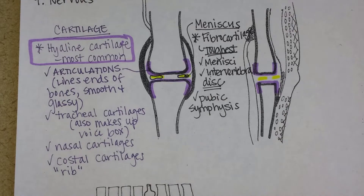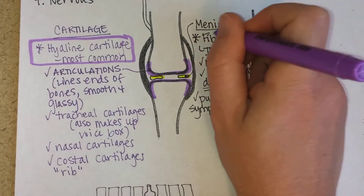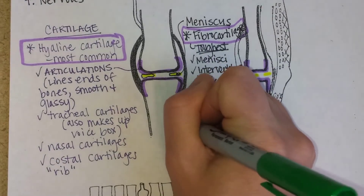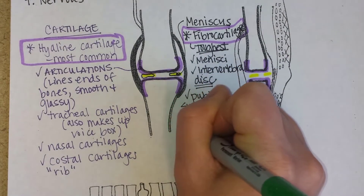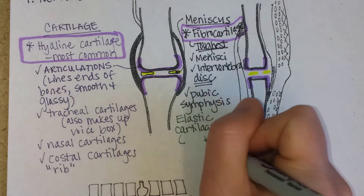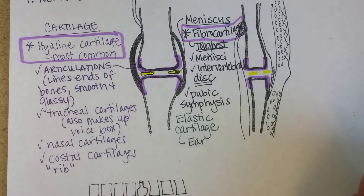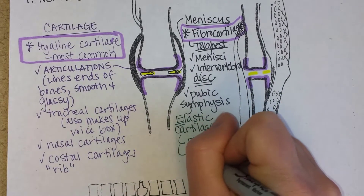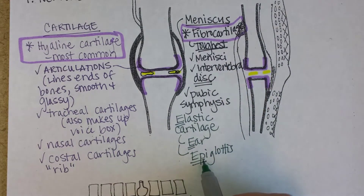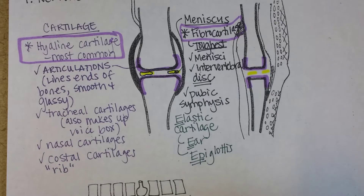The last kind of cartilage is called elastic cartilage. As the name suggests, it is the most flexible, and we find it in a flexible spot — the ear. Notice it starts with an E, just like elastic — that's how you can remember it. The other place elastic cartilage is found is the epiglottis, which is a flap of cartilage that covers the opening to your trachea when you swallow, protecting you from choking.